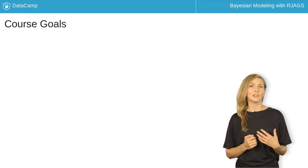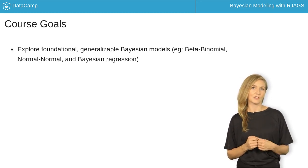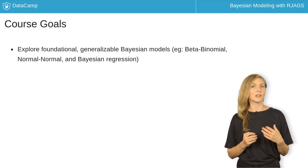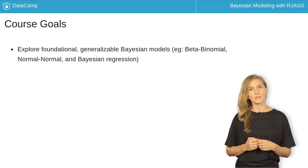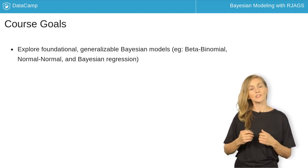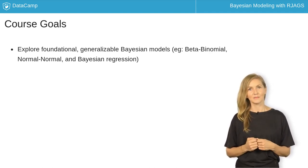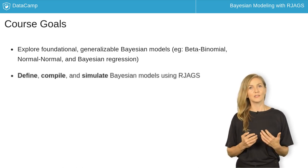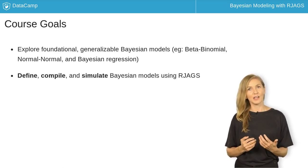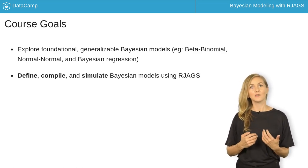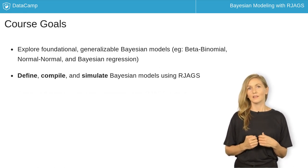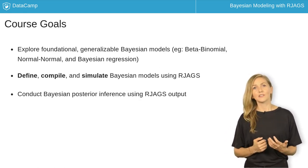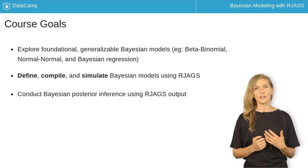Specifically, you'll explore foundational Bayesian models such as the beta-binomial, normal-normal, and Bayesian regression models that are easily generalized to broader settings. You will learn how to define, compile, and simulate these models using the RJAGS package in R. Finally, you will learn how to use RJAGS simulation output to conduct Bayesian posterior inference.